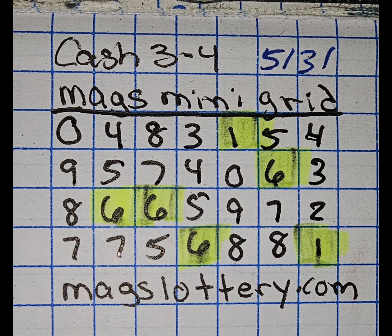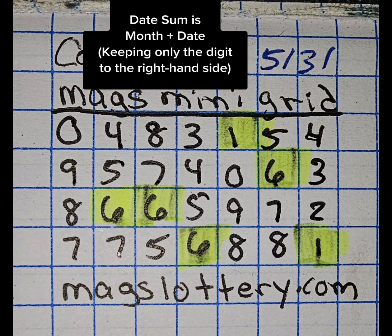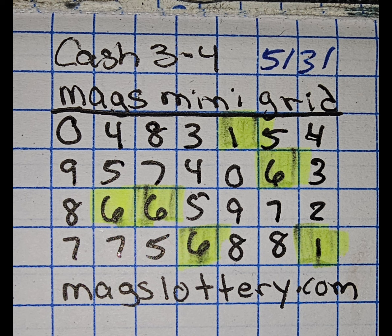Now, you'll see that you have certain digits highlighted — that is going to be your date sum. Your next hit will have at least one of the digits either touch or include one or more of those areas. Sometimes there's a lot on the board, sometimes there's fewer. Your next hit will either touch or include off of those, and you can also reference your previous hit number.